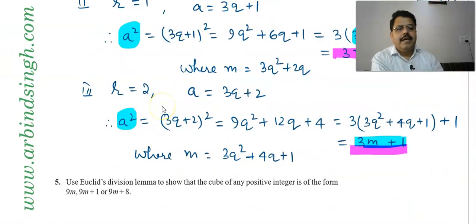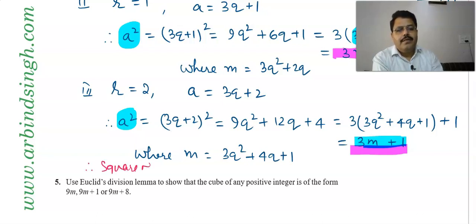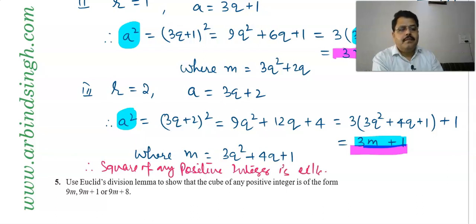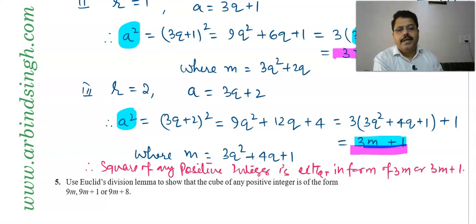Therefore, the square of any positive integer is either in the form of 3m or 3m + 1. This completes the proof of the given statement.